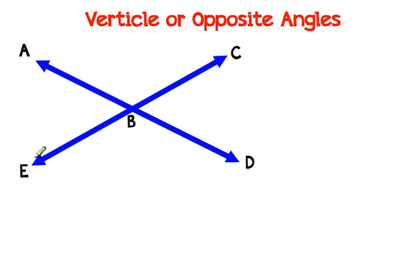The first type of angles are vertical or opposite angles. Vertical or opposite angles are angles that are opposite each other. Very easy to remember because you can think about opposite means across from.